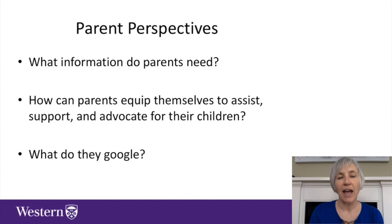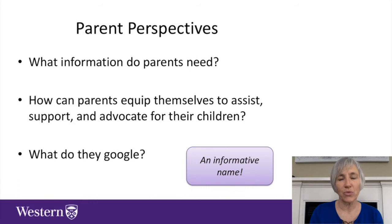From a parent's perspective, what information do they need? How can parents equip themselves to assist, support, and advocate for their child? What do they Google? Think about yourself — when one of your family members has a concern regarding their health or educational achievements, one of the first things you do is go to the internet to look up that information. You need a term to do that research. Parents need the same thing. They need an informative name, a label they can remember, Google, find information about, talk to others about, and compare with other parents and families.